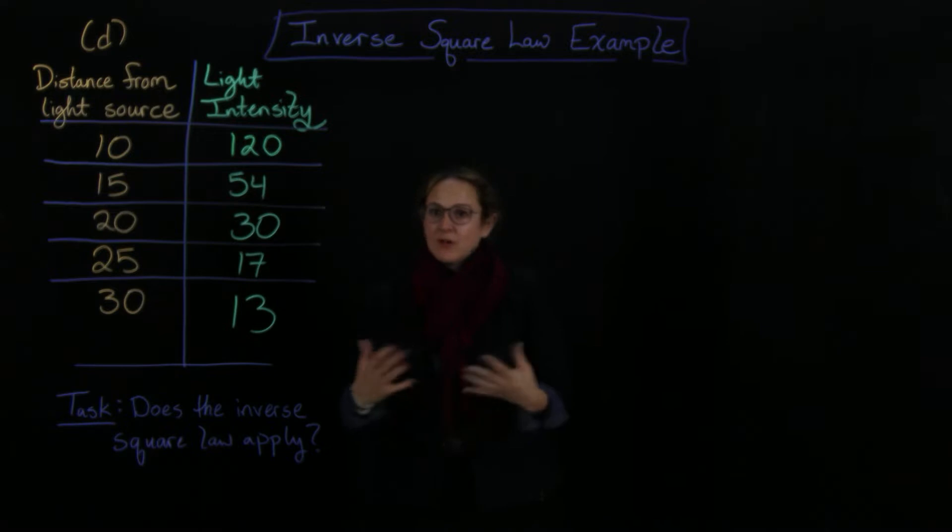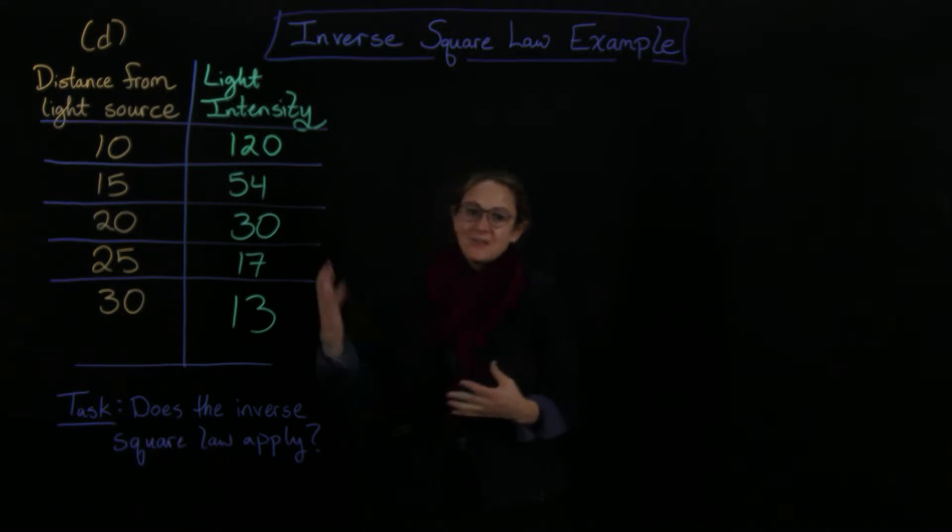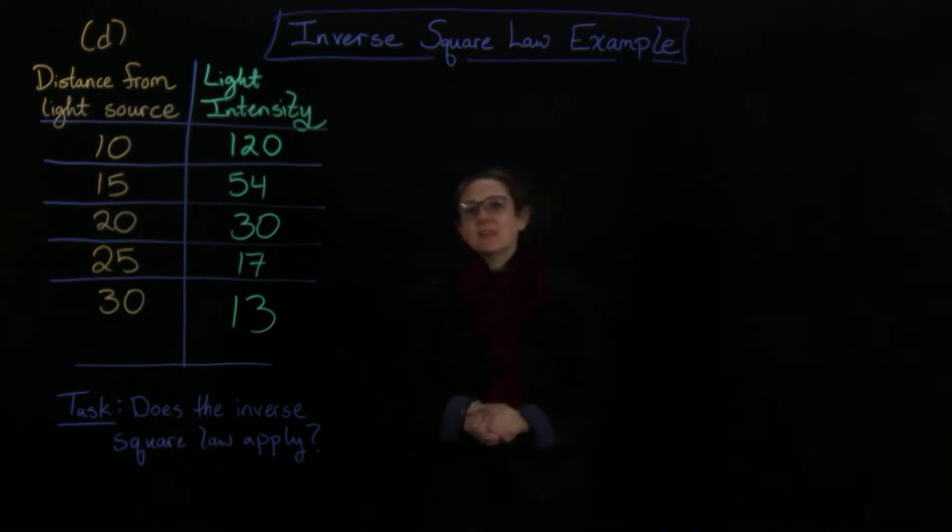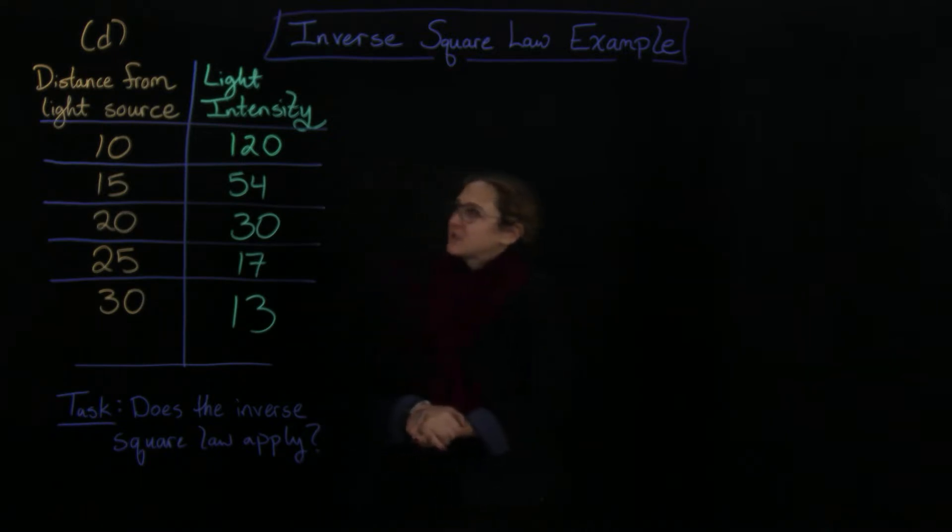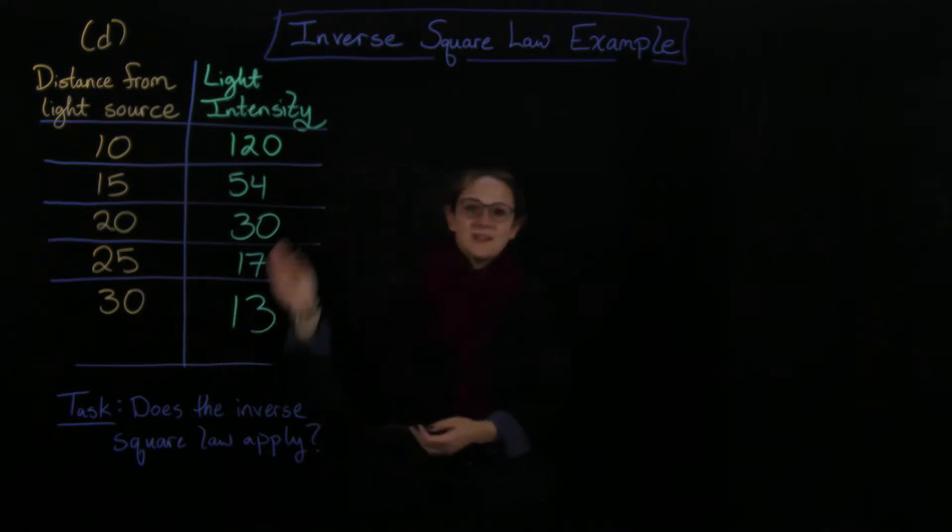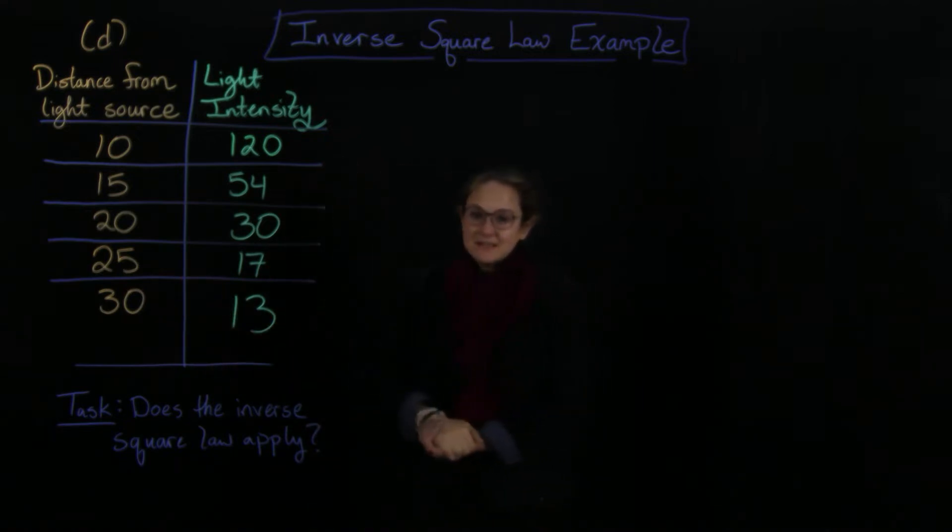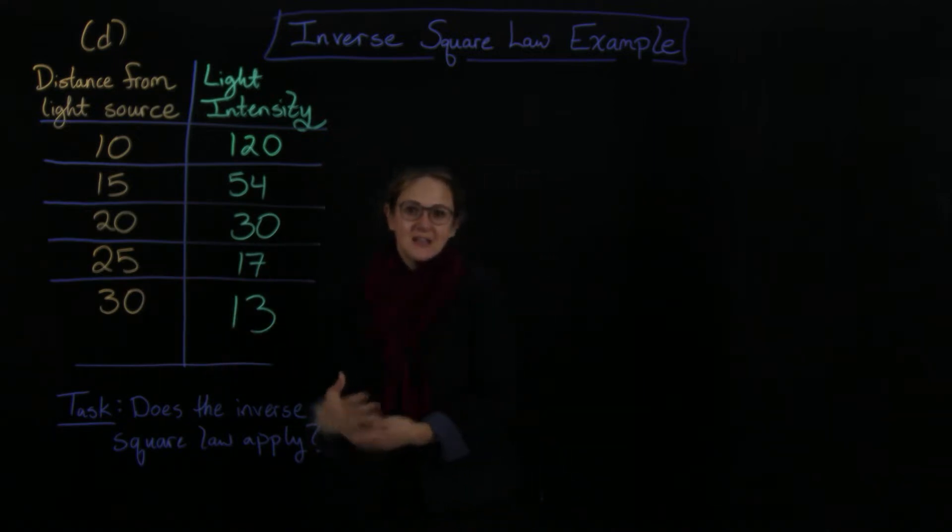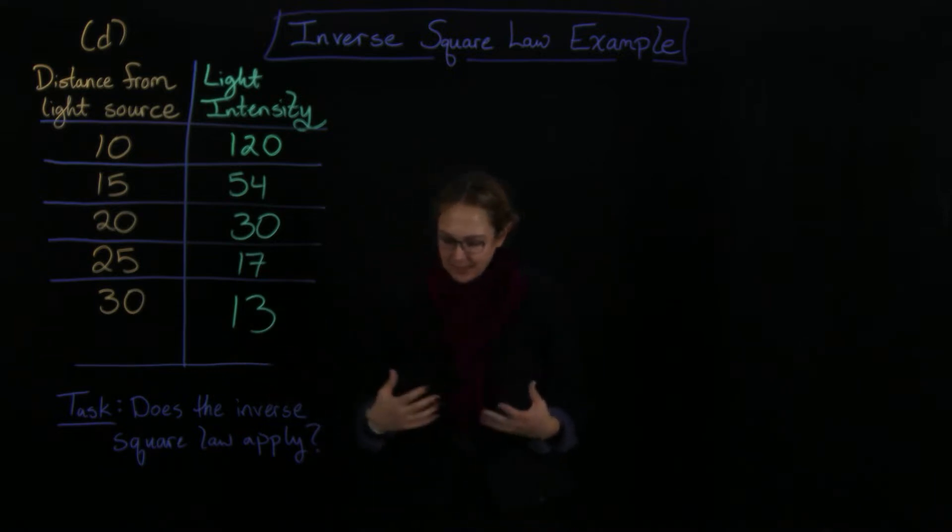What I wanted to do is to talk about the inverse square law. This is a point light source example where we have some kind of distance from the light source, and then we know this is how the intensity looks. We want to understand if the inverse square law applies.